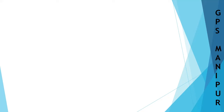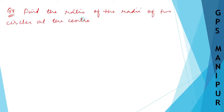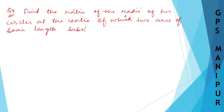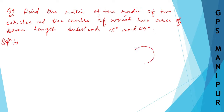Now we are doing exercise 13.1, question number 8. Let me write down the question. The question says: find the ratio of the radii of two circles at the center of which two arcs of the same length subtend 15 degrees and 24 degrees. So there are two circles.